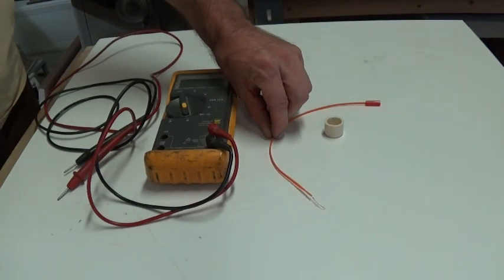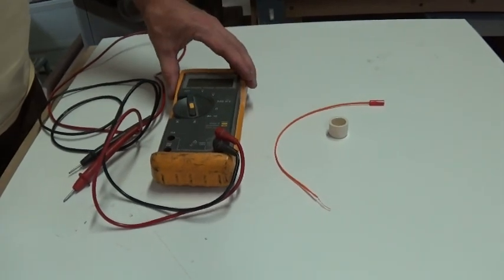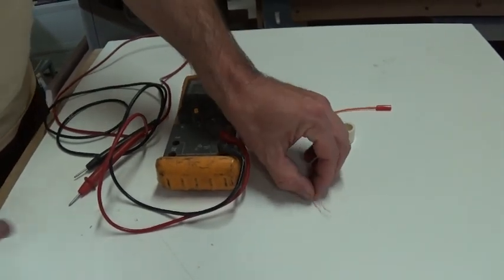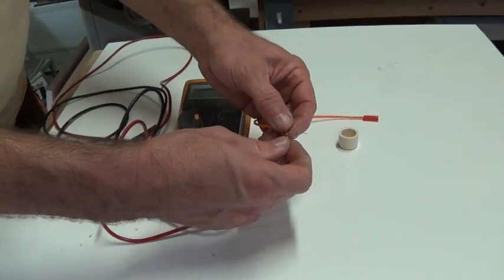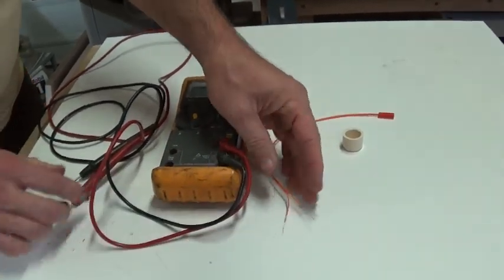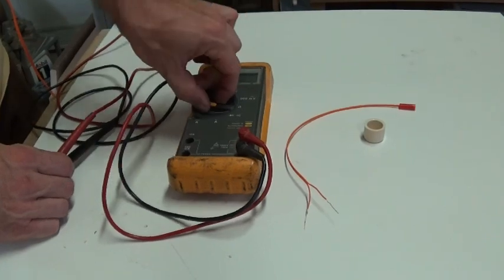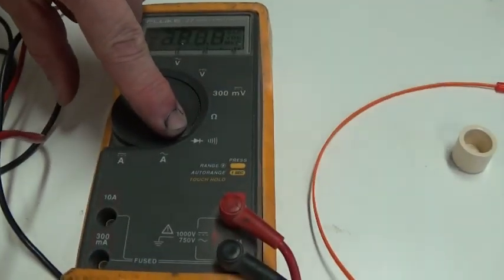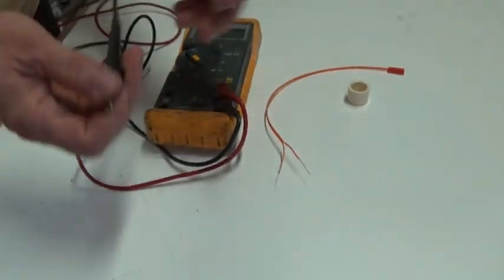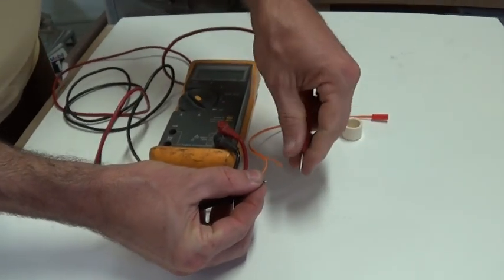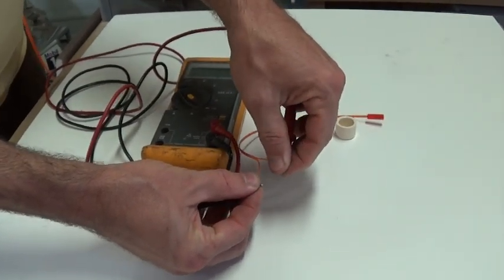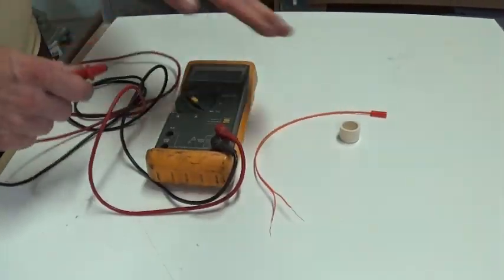Now before we install the e-match we need to use the digital voltmeter to make sure that the e-match has continuity and that it's not defective. So we unwrap the two wires. We'll set the meter into diode mode or continuity mode and we'll just make sure that we get a beep. So that e-match is good.